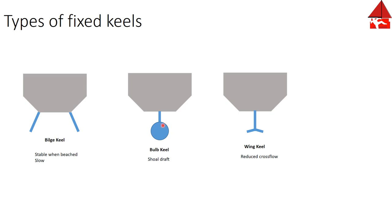Next, the bulb keel. The idea here is to put the weight at the very bottom of the keel. The farther that the weight is moved down from the force acting upon the sails, the more effect that weight will have. By putting it all into this bulb down at the bottom, you can get more force from the same amount of weight.